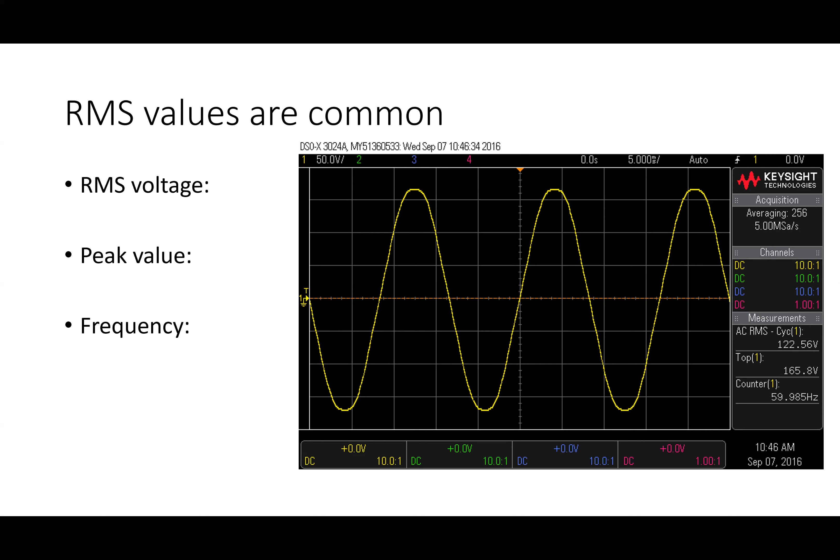Looking at the measured waveform: the RMS value is 122.56V — close to the nominal 120V. Duke has an obligation to keep it within a particular band, and you'll actually see it higher in the morning than in the afternoon. The peak value is 165V and the frequency is about 60Hz. If it were truly 120V RMS, the peak would be 120 times the square root of 2, which is about 169V.